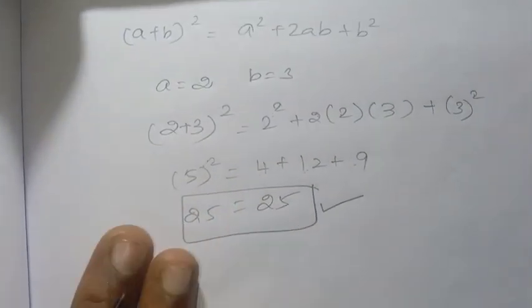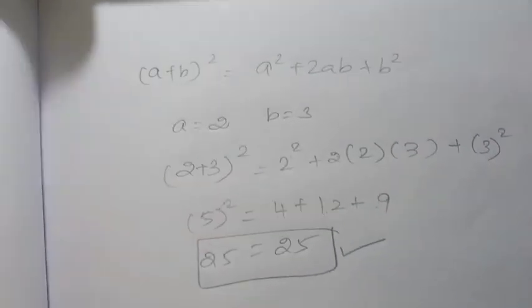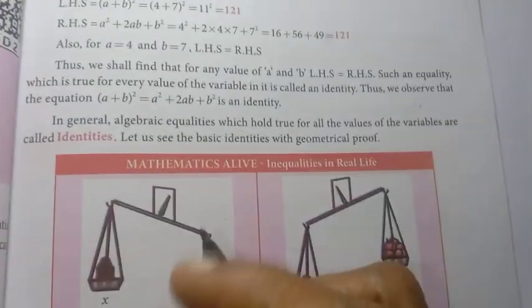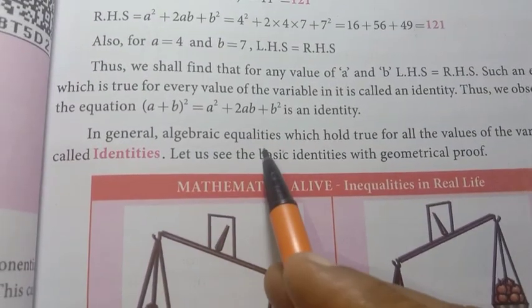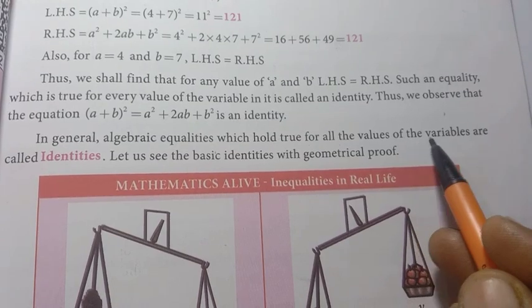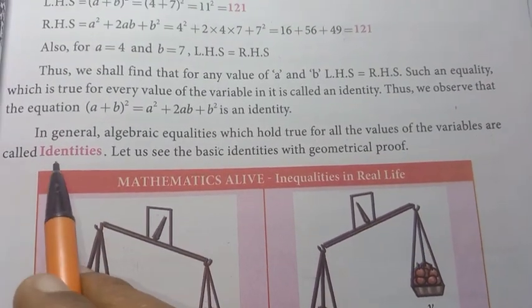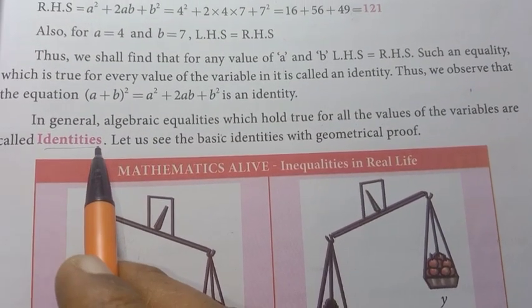So the two sides are equal — that's the identity. Identities are algebraic equalities which hold true for all the values of the variables.